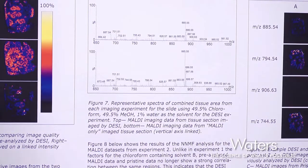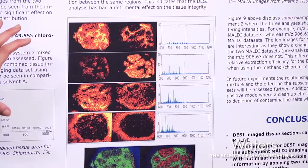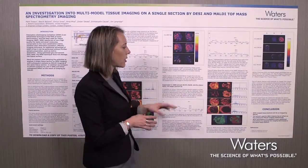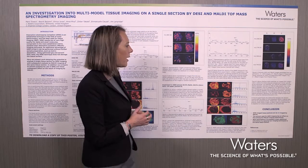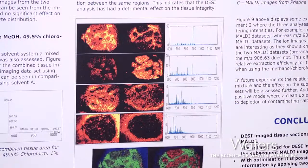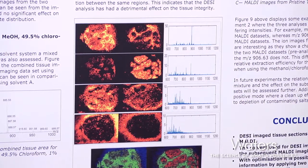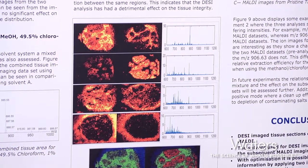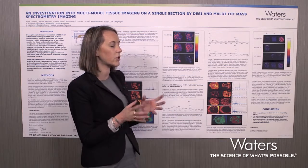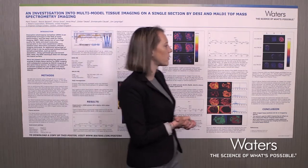When we look at the imaging side of things, running the non-negative matrix factorisation shows that the images are quite different and we can't really correlate the two datasets. So we think that with this solvent composition, the DESI imaging has been more destructive to the tissue sections.